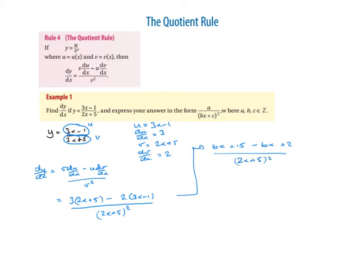Collecting like terms: 6x minus 6x cancels out, and 15 plus 2 gives us 17 on the top. So it's 17 over (2x plus 5) squared, which is of the form a over (bx plus c) squared, and they're all integers: a is 17, b is 2, and c is 5.